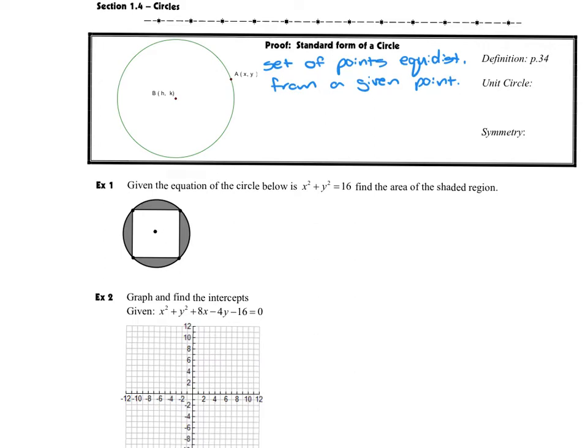So let's start here at the top and look at what is the equation for a circle. And I want to remind you again that the equation of a circle, the Pythagorean theorem, and the distance formula are all the same equation, just rearranged.